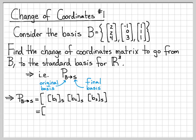So what is B1 with respect to the standard basis? Well, this vector (2, 2, 4) is already written with respect to the standard basis. Same thing for B2: the vector (-1, 0, 3) is already written with respect to the standard basis. When we write down this vector, we know that it means -1 times (1,0,0) plus 0 times (0,1,0) plus 3 times (0,0,1). That's what this notation means by definition.